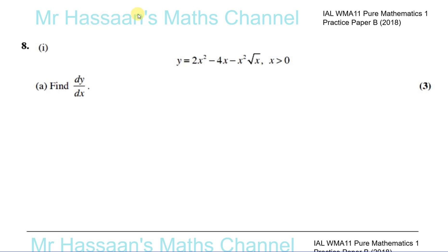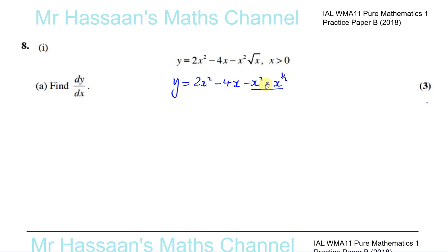Part 1 of the question tells us to differentiate y equals 2x squared minus 4x minus x squared times root x, and we're told that x is greater than 0. Before we can differentiate this, we see x squared times root x, which should really be combined into one x term. We can't differentiate them separately and multiply them together, so we have to combine them using the laws of indices.